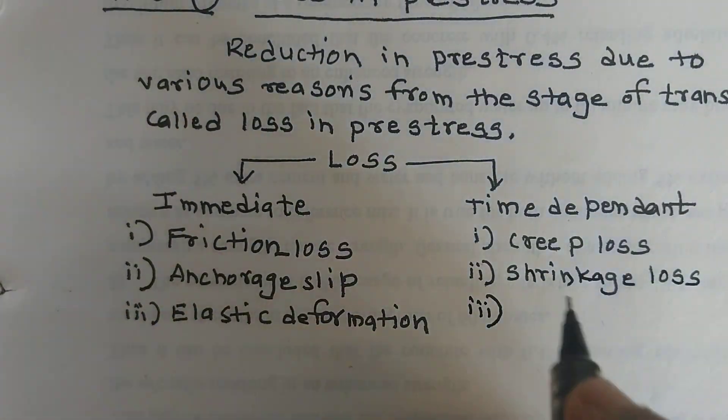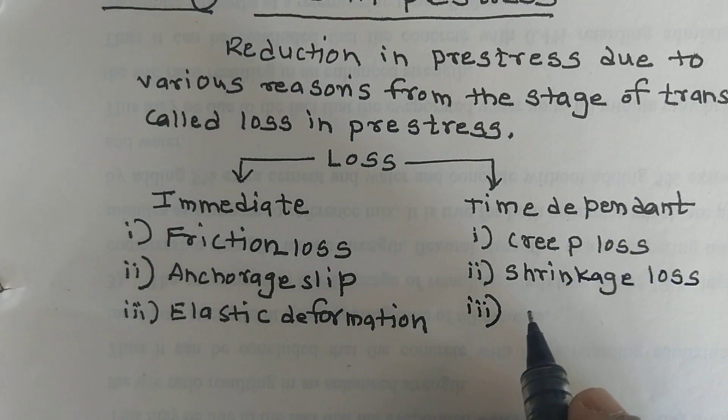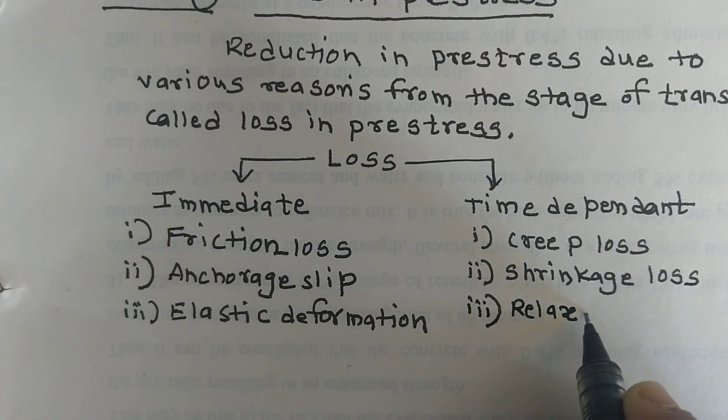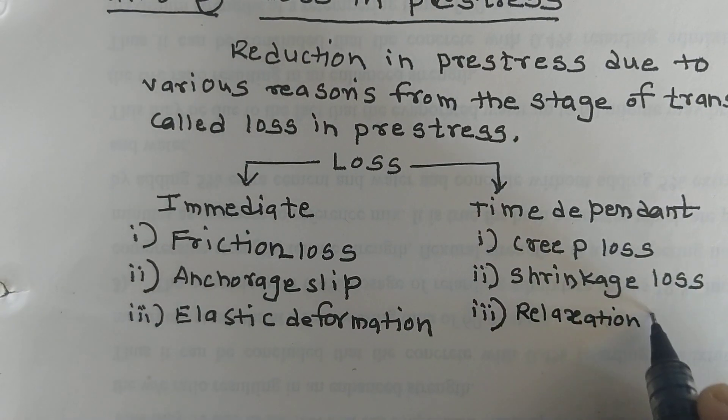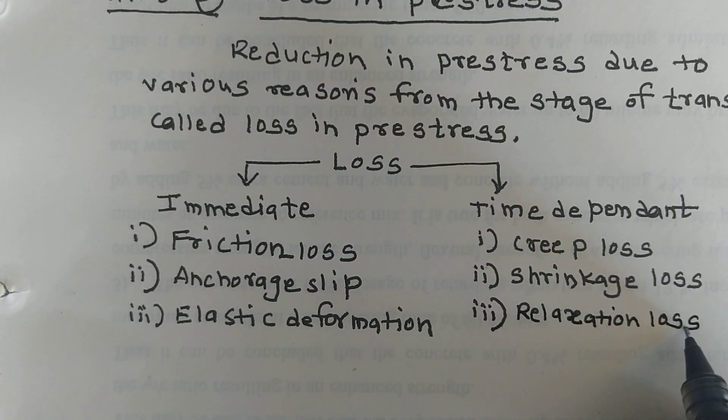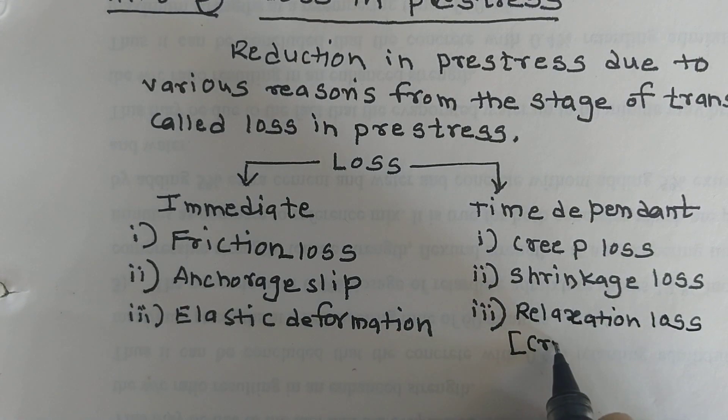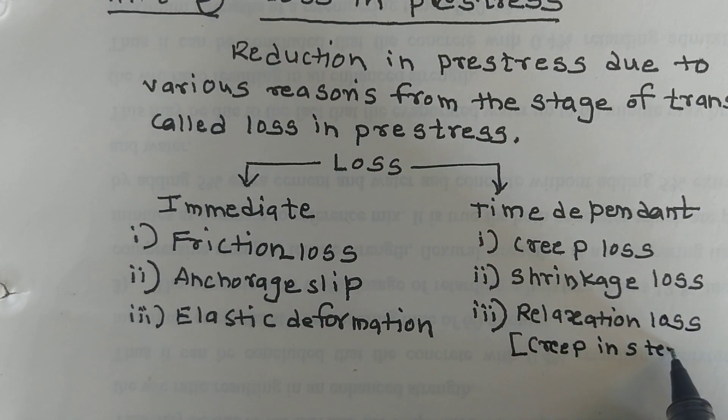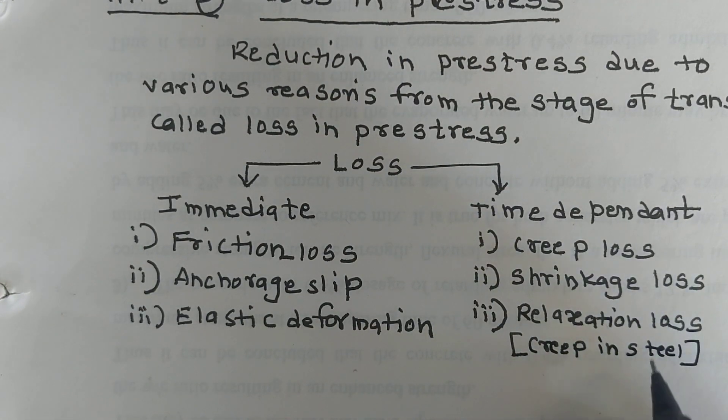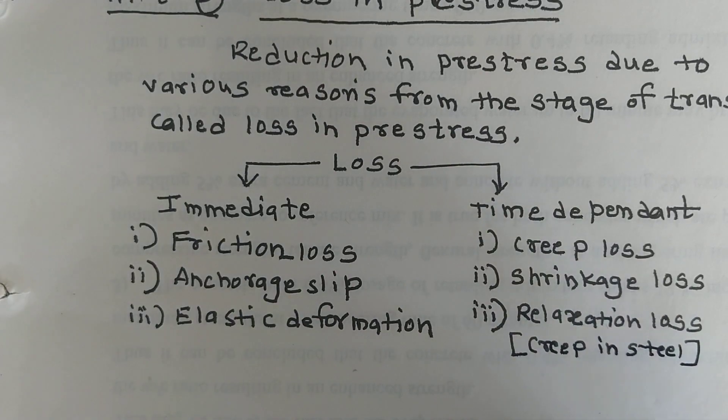Third one is relaxation loss. It is also called creep in steel.